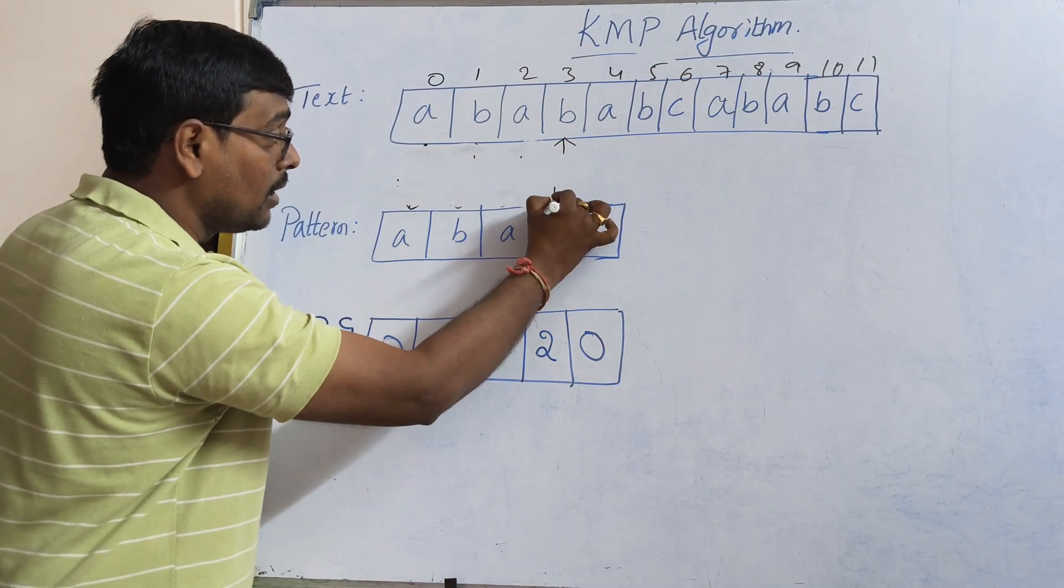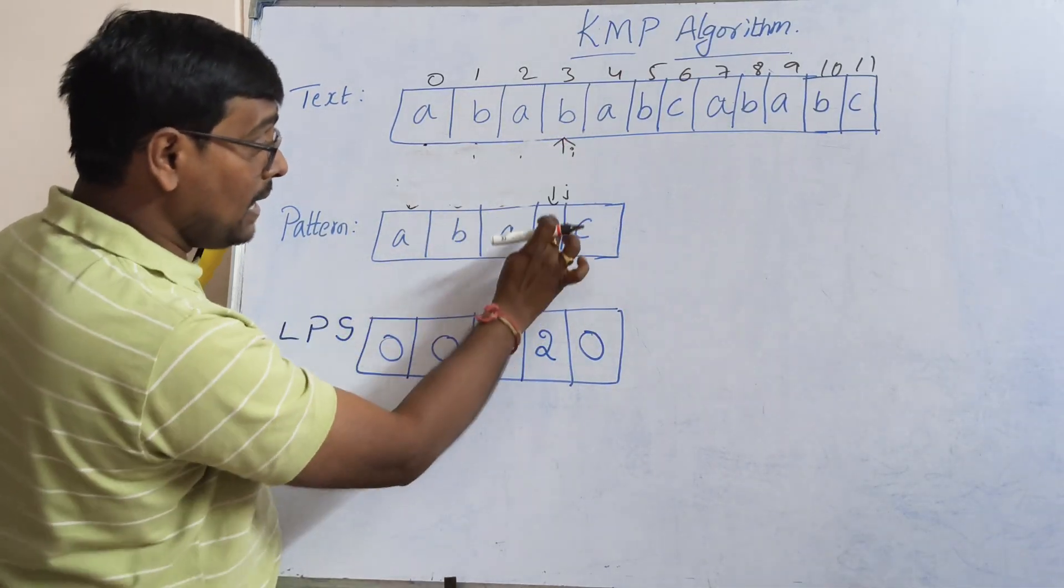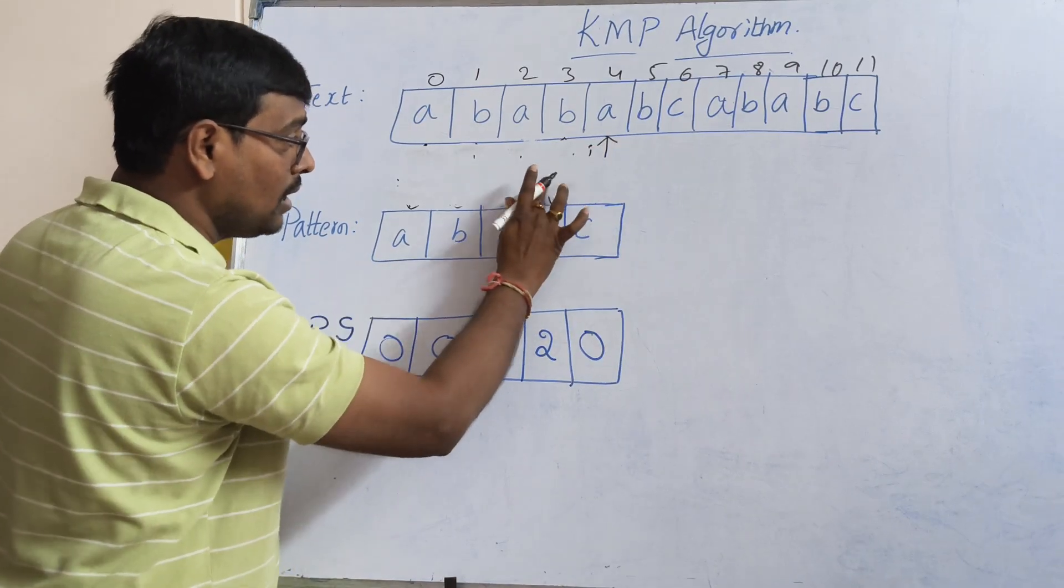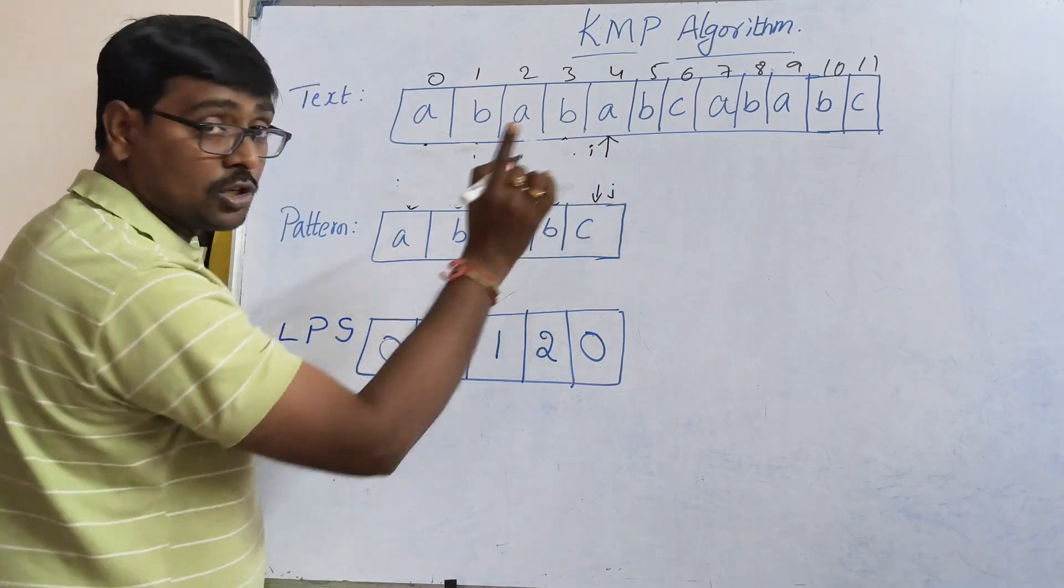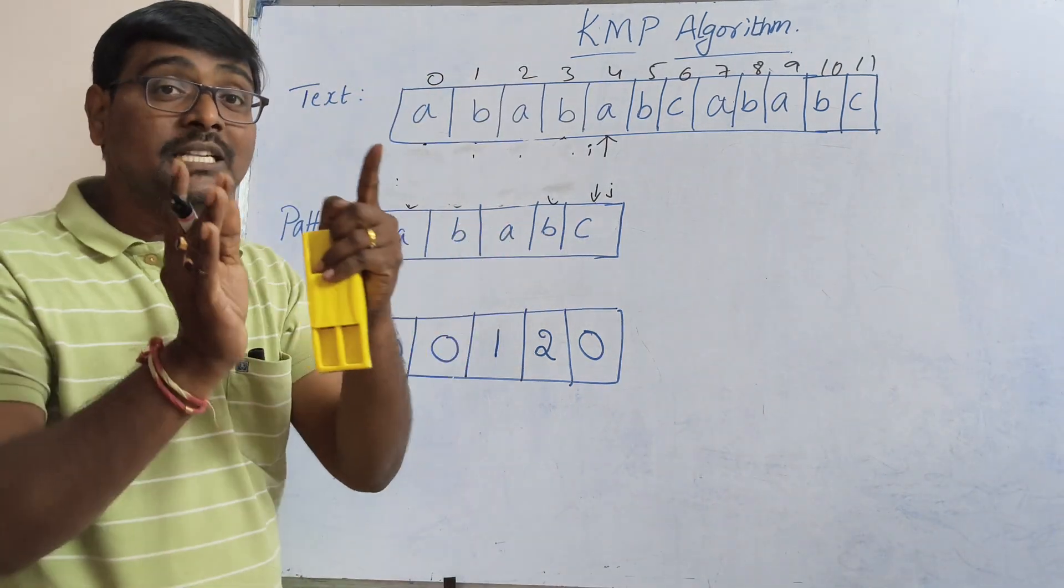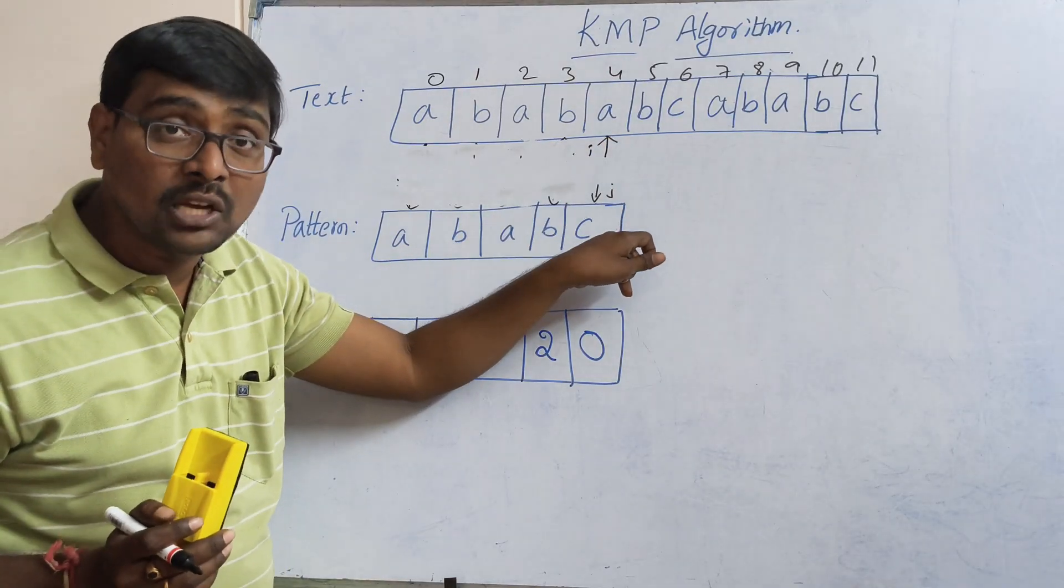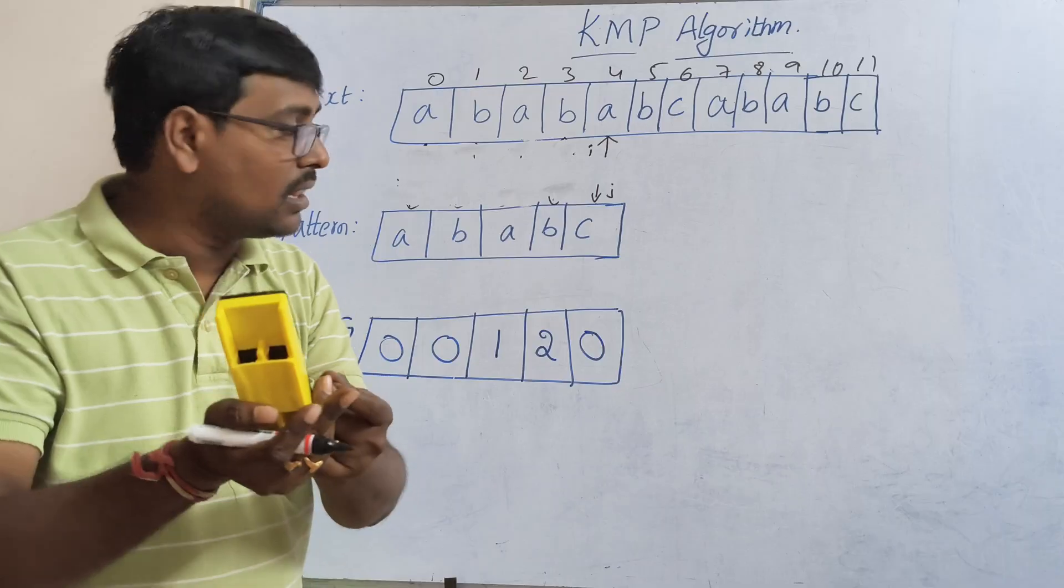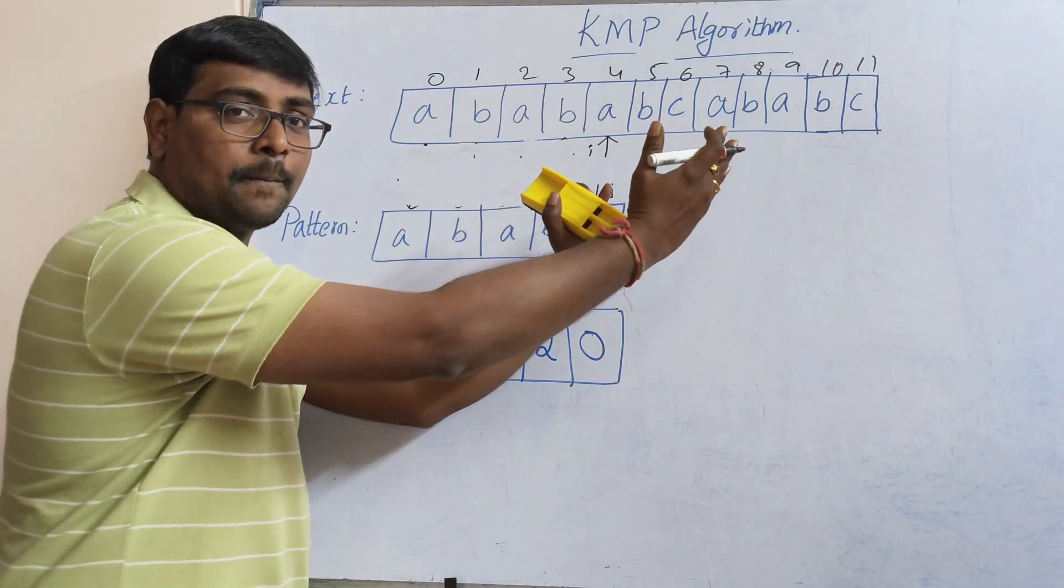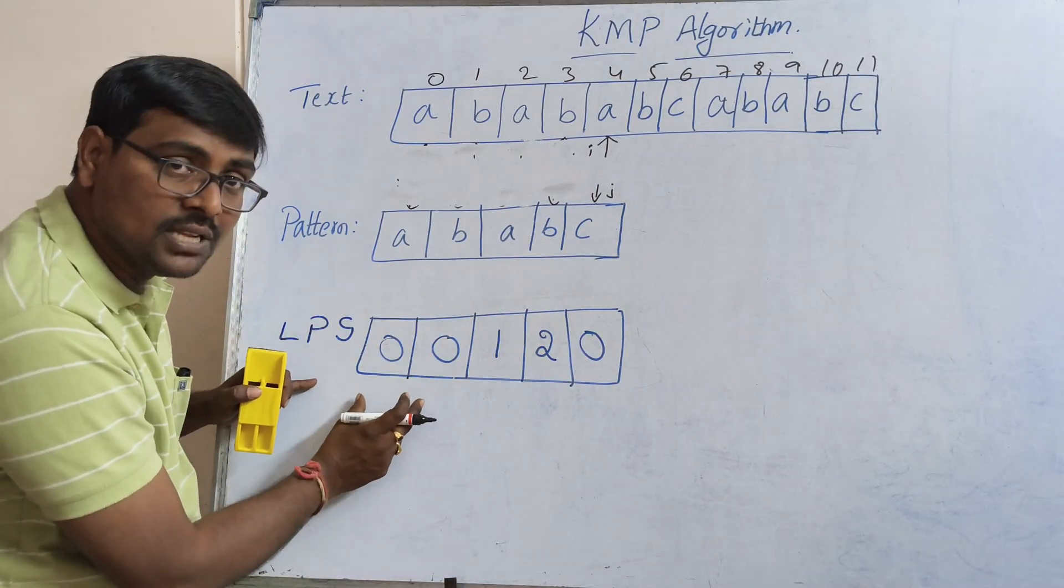Now 'i' is at this position, 'j' is at this position. Here the value is 'a', here the value is 'c'. Mismatch occurred. That is the concept. Whenever mismatch occurs in a regular brute force algorithm, we blindly start the search from this position again. Same process.